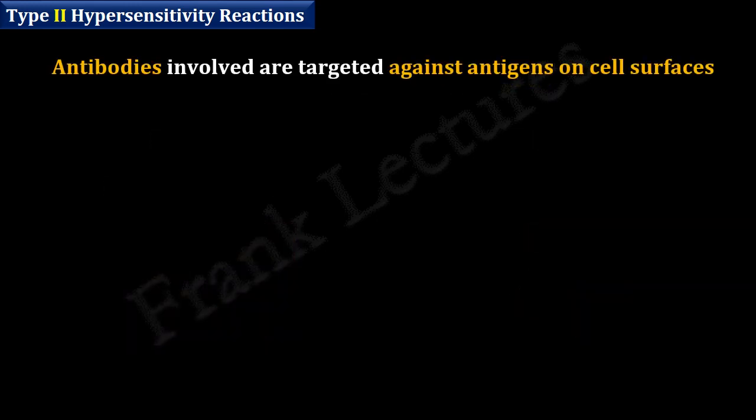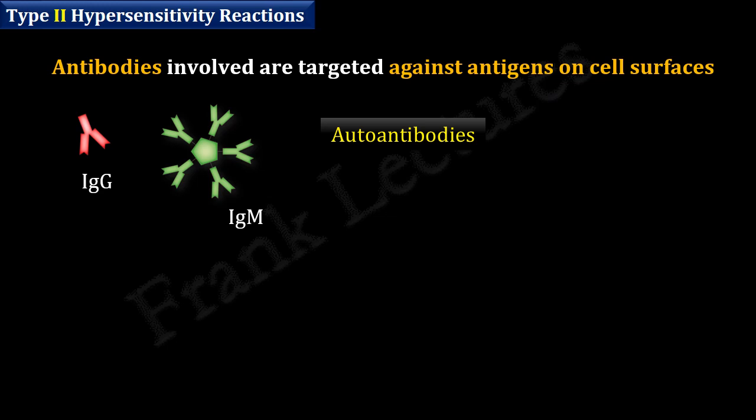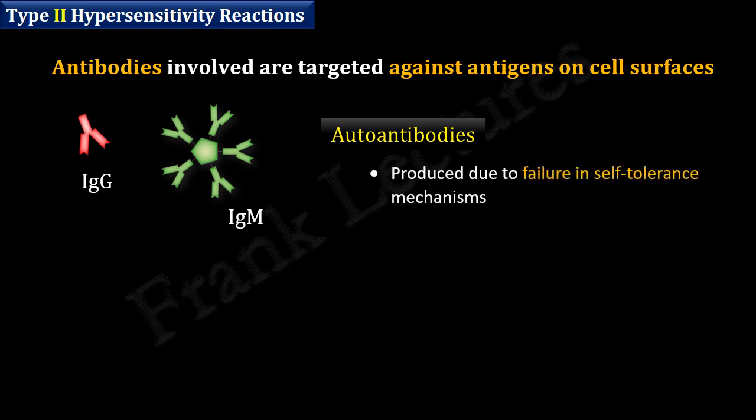These reactions are mediated by antibodies directed against the antigens on the surface of cells. These antibodies mostly belong to the IgG and IgM class. Further, these antibodies may be autoantibodies — recall that autoantibodies are formed due to failure in tolerance mechanisms.